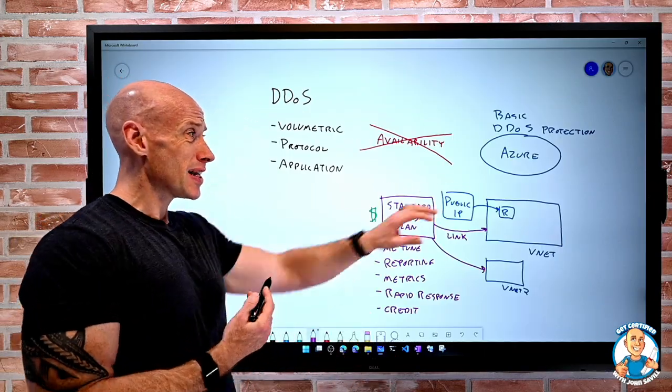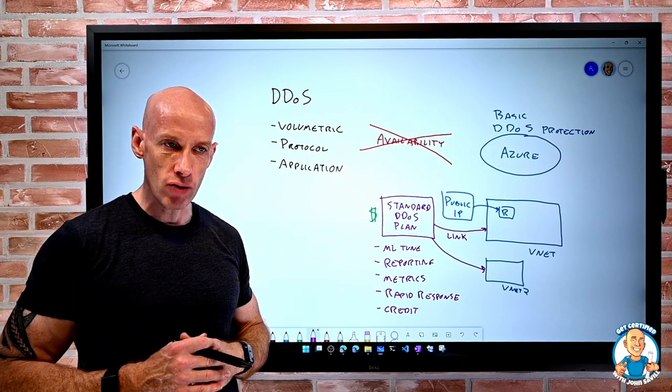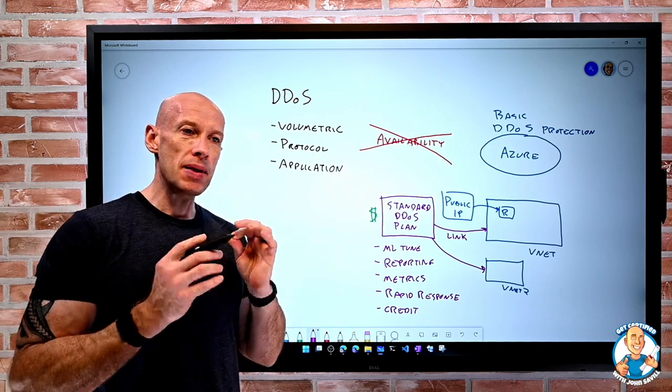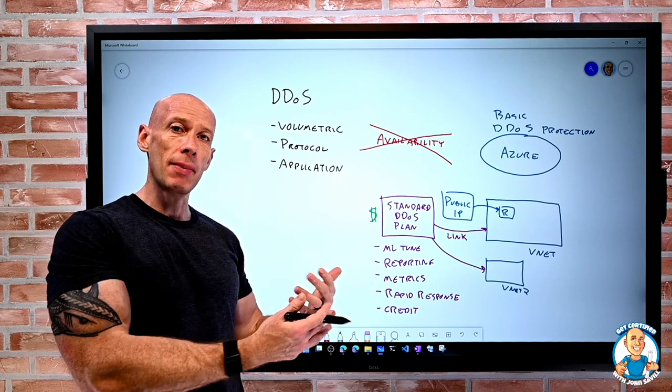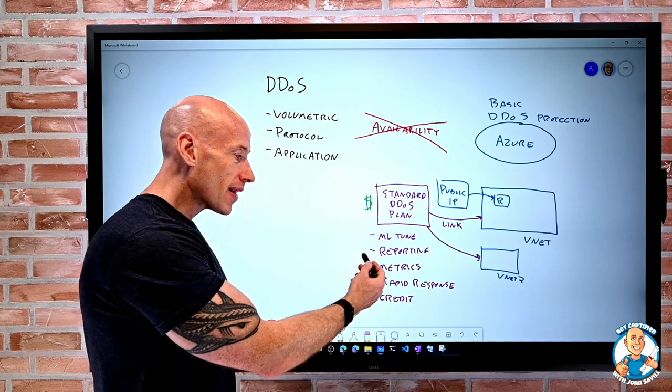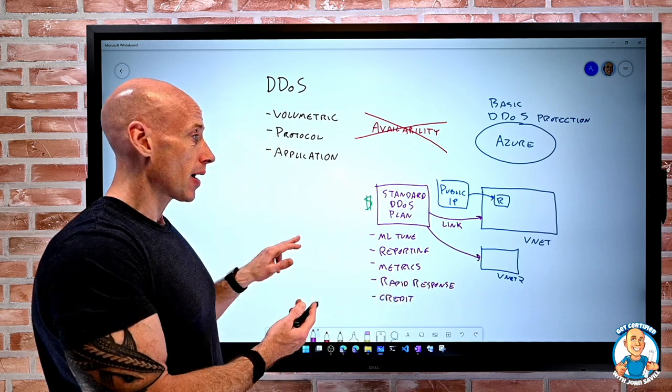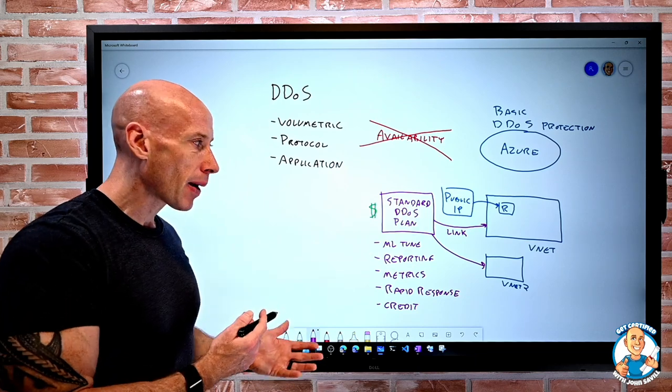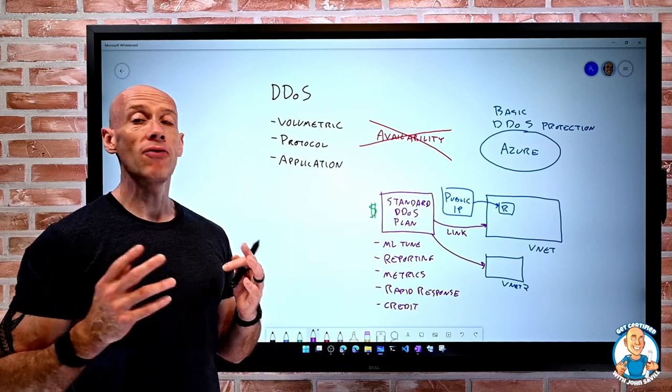Yes, we get this basic one for any public facing Azure resource. But if I want it to be more tuned, more in line with what my application normally sees, and I want maybe that better help, I want that insight, I maybe want credit if something doesn't go to plan, then I buy a standard plan and I link it to my virtual network.